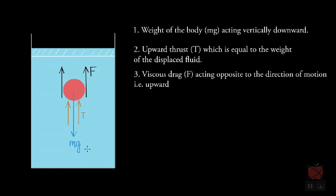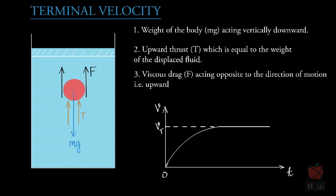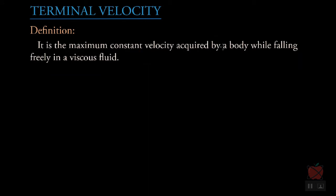After the body has traveled some distance, the total upward force will balance with the total downward force. When no net force acts on the body, it moves with constant velocity. Looking at the velocity-time graph: from a stationary state, velocity increases and then becomes constant. This maximum constant velocity is denoted by vt and is known as terminal velocity.